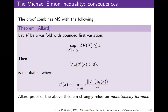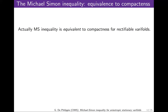The proof of the compactness theorem relies strongly on the monotonicity formula in two ways: via the Michael-Simon inequality, which itself relies on monotonicity, and via the rectifiability criterion, which also requires monotonicity formula. There is a nice observation, apparently never made before: Michael-Simon inequality is actually equivalent to compactness for rectifiable varifolds.